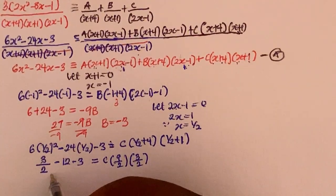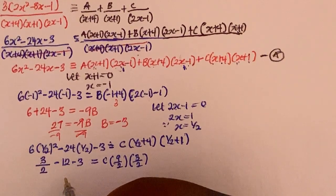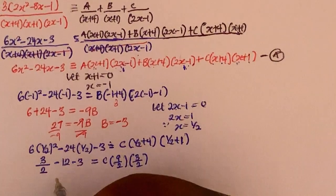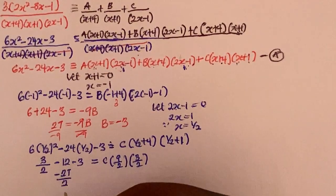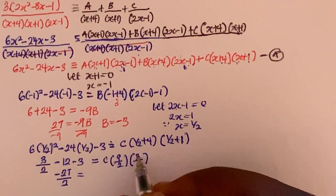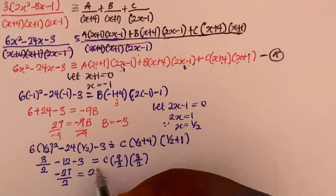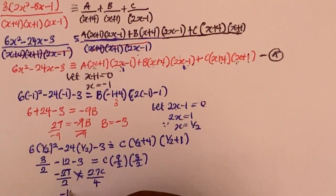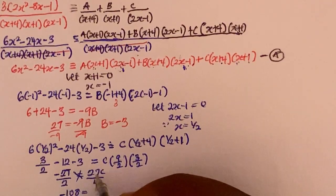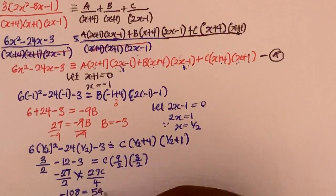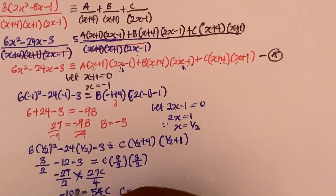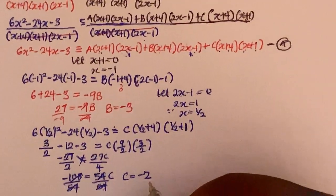Continuing: 3/2 minus 12 minus 3 equals -27/2, which equals C times (9/2)(3/2) = 27c/4. Cross multiplying: -27 times 4 = -108 equals 54c. Dividing by 54, I get C equals -2.